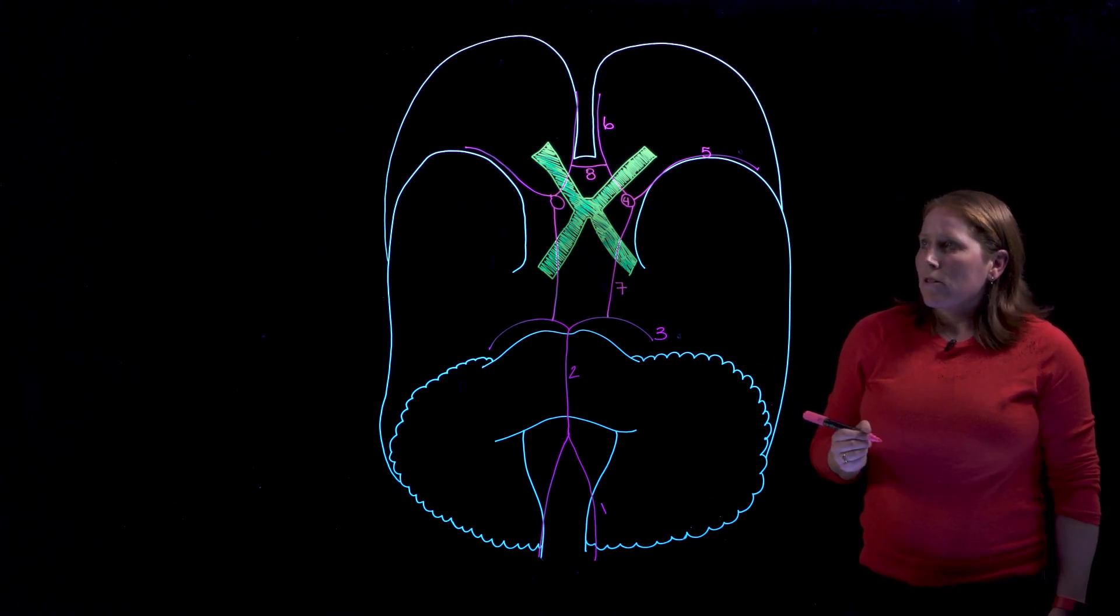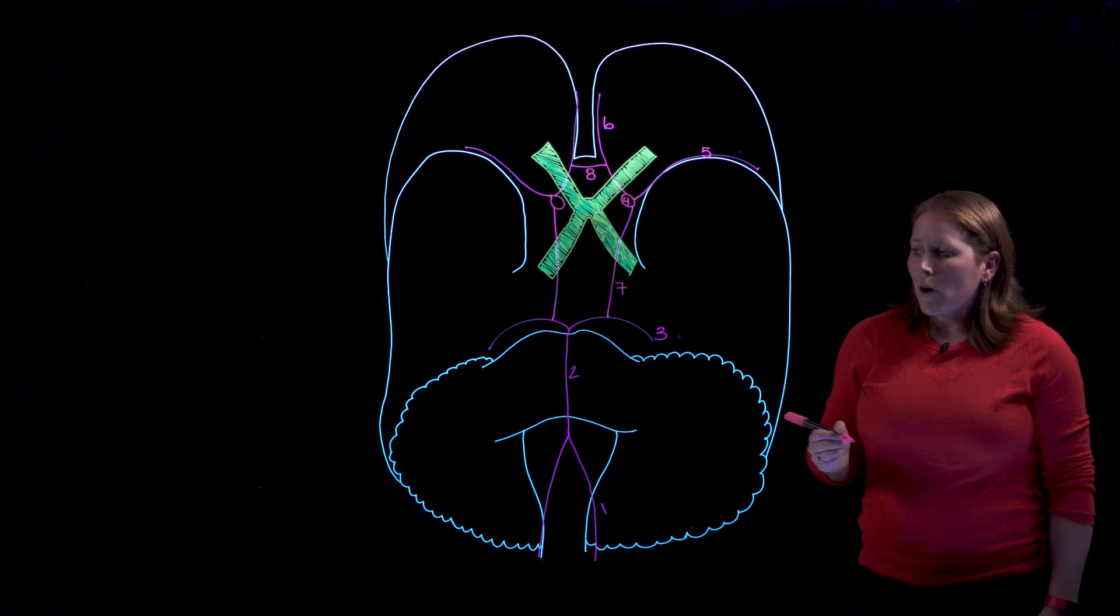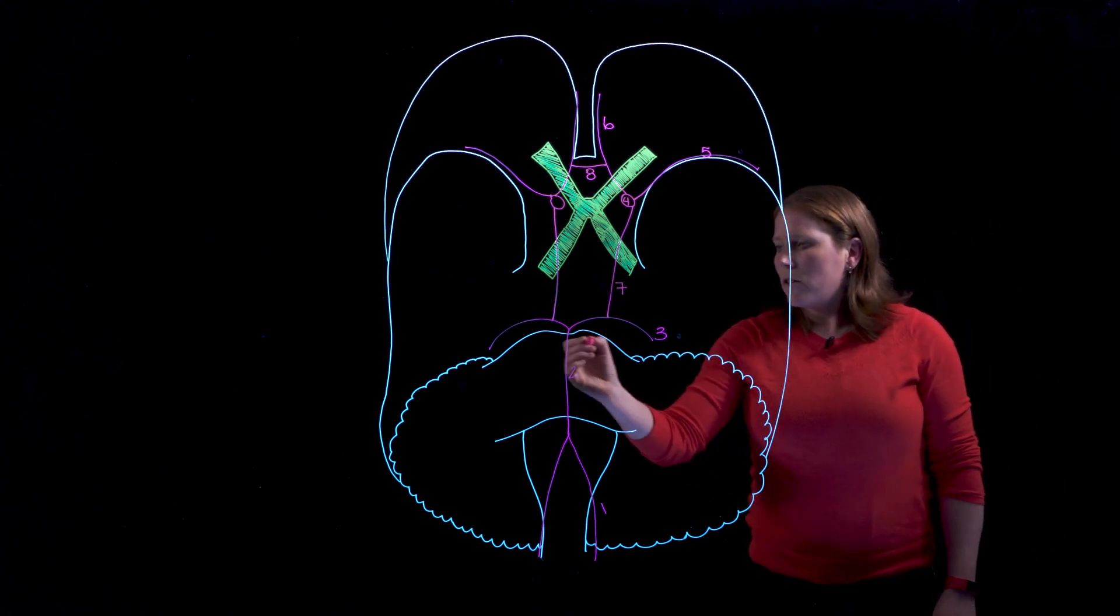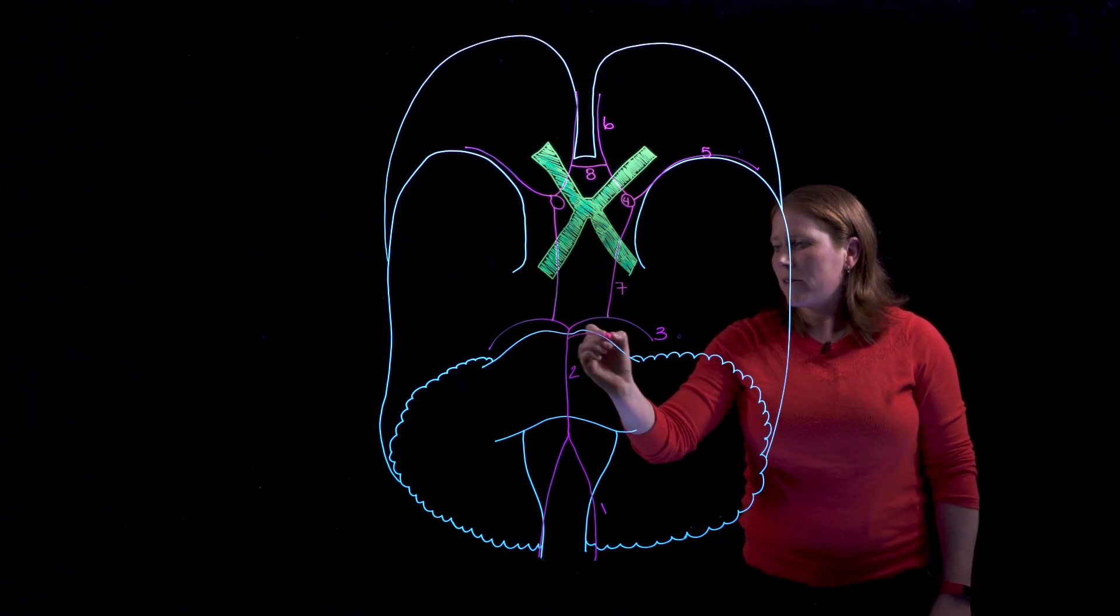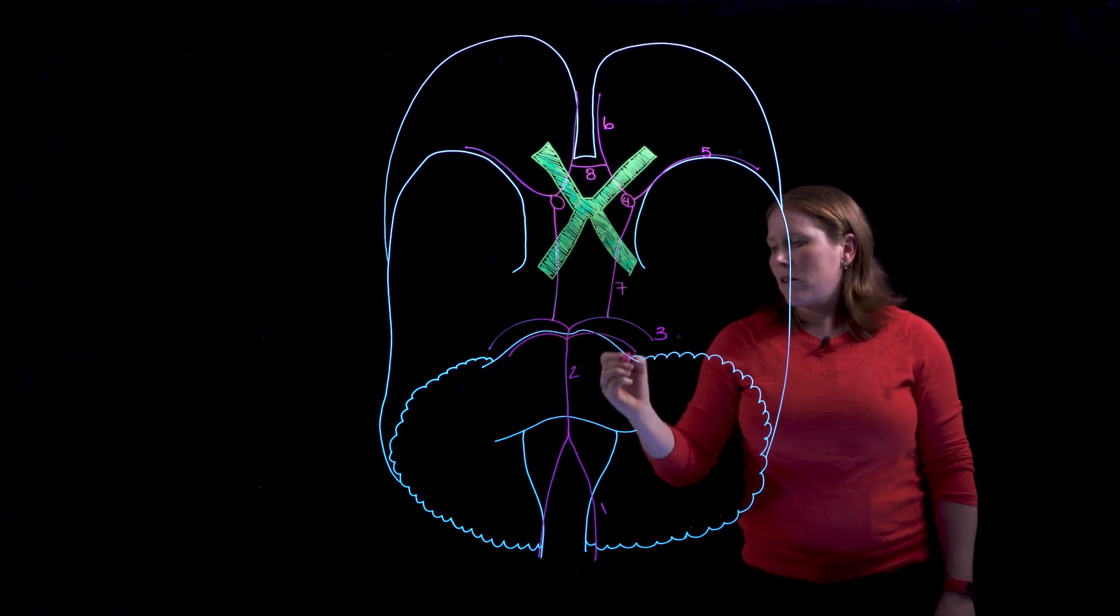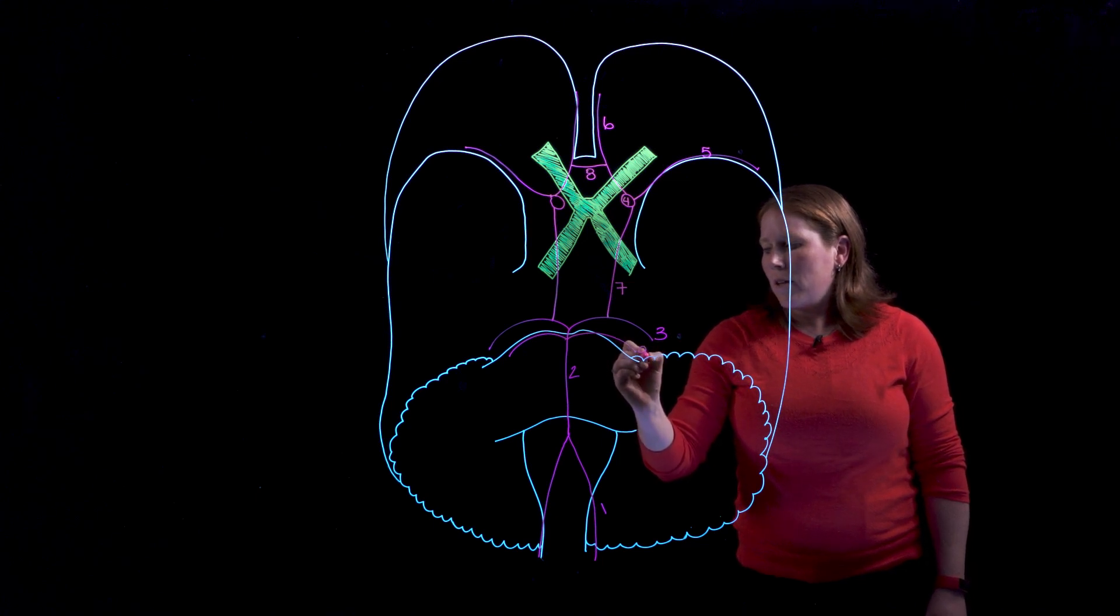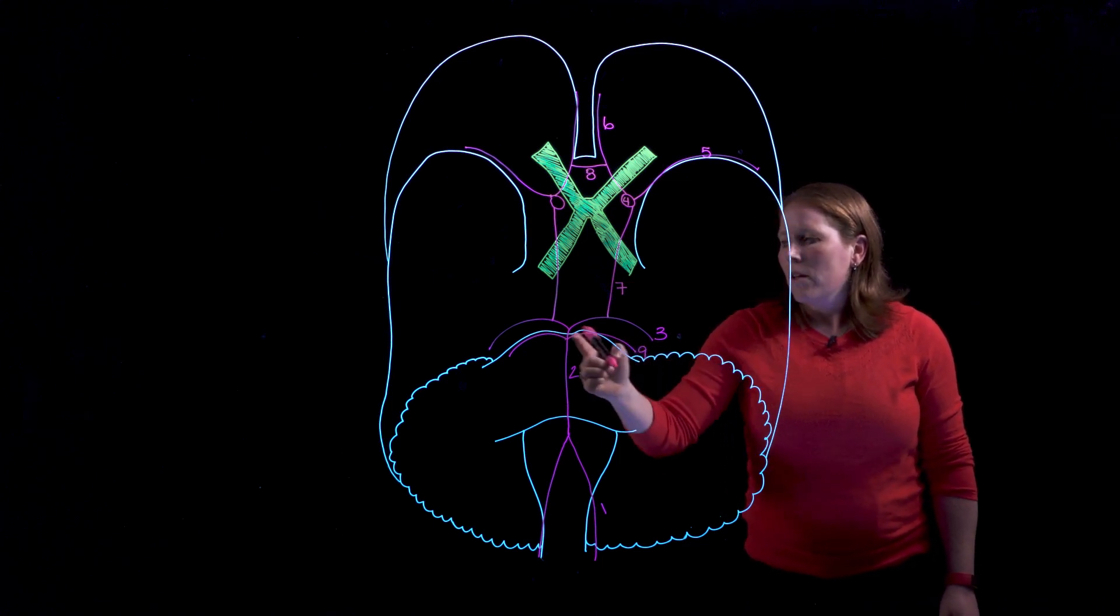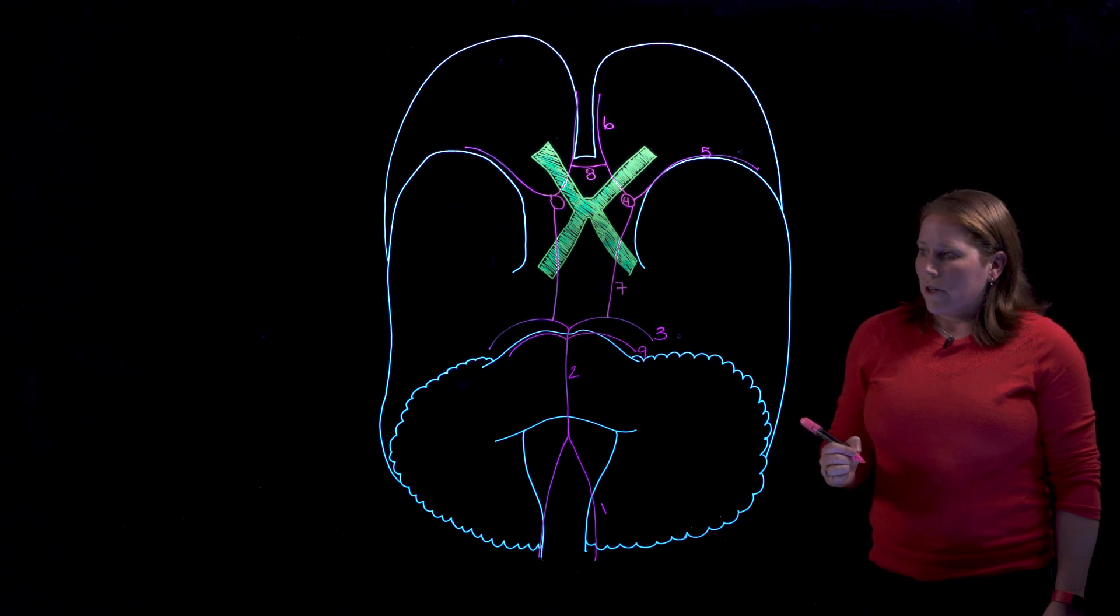We had three pairs of arteries for the cerebrum we also have three pairs of arteries for the cerebellum. I'll start with a pair right here that often get confused with the posterior cerebrals so this will be number nine. These are the superior cerebellar arteries.